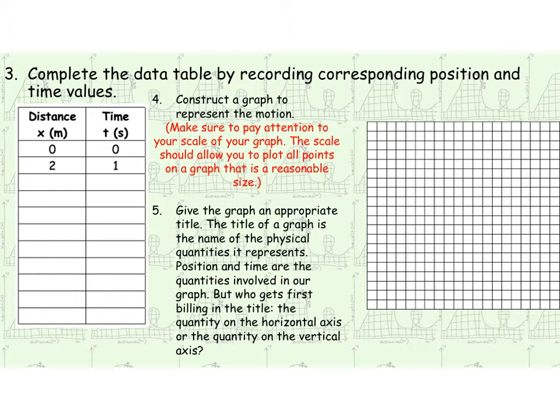In order to take that basically number line representation of walking dude's data, let's turn it into first a data table, and then we're going to actually graph it on an XY Cartesian plane. We know that walking dude was going two meters every second. So let me just go ahead and fill my seconds in here.